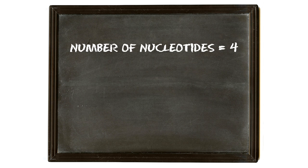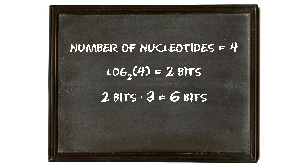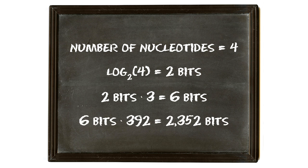But to really pwn their stupid creationist asses, let's do the math to see how much information was created by this single mutation. There are 4 nucleotides all total. To see how much information they take, we use the formula from information theory: the log base 2 of the number of possibilities — in this case, 4 — which equals 2 bits. Each amino acid is coded by 3 nucleotides, so that's 6 bits of information for every amino acid. Since the mutation generated a sequence of 392 amino acids, that means this single mutation event added 2,352 bits of information to the bacteria's genome.